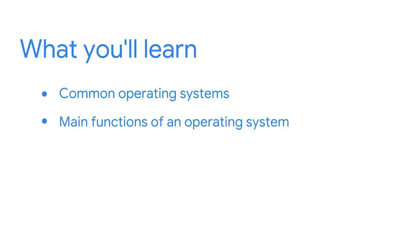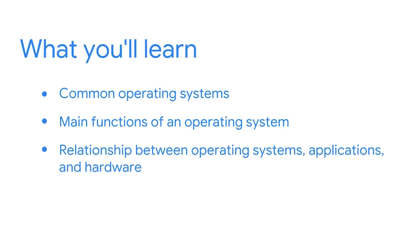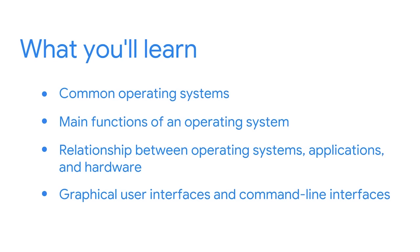How many times a week do you use a computer? For some of us, the answer might be a lot. There are incredible machines that let us do everything from using specialized applications when completing a task at work, to sending emails to loved ones in a distant place. That's where operating systems come in. In this section, we'll learn about common operating systems and explore the main functions of an operating system. Then we'll learn the relationship between operating systems, applications, and hardware. Finally, we'll compare graphical user interfaces and command line interfaces. Understanding operating systems is an important foundation for your career in security.